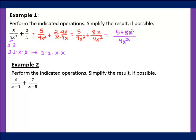Now that we have a common denominator we put the numerators together: 5 plus 8x over 4x². We check to see if it's factorable — 5 and 8 don't have anything in common and they don't both have x's, so this is our best answer.